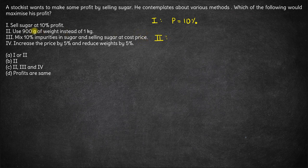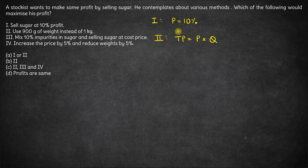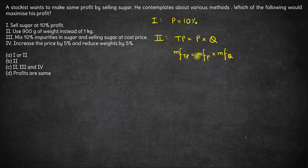Use 900 grams of weight instead of a 1 kg weight. Now, we know total price is price per kg multiplied by quantity. So the percentage profit is the percentage change in total price. The multiplication factor for total price equals the multiplication factor for price multiplied by the multiplication factor for quantity.